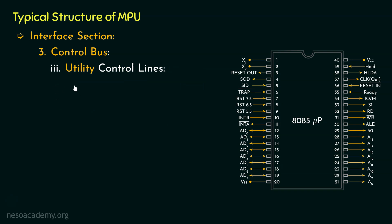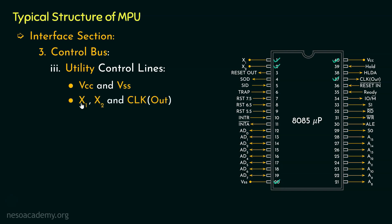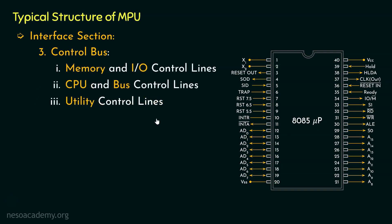Let's now learn about the third category, that is the utility control lines. In this category we have the power supply lines — VCC and VSS. VCC, or pin number 40, is responsible for the 5V DC power supply, and VSS, that is pin number 20, is the ground connection. Next, we have the pins X1, X2, and the Clock Out — the clock signals. Pin numbers 1 and 2 are responsible for the clock pulse of the microprocessor, and if the microprocessor wants to synchronize the peripheral devices, it gives the timing reference to the peripheral devices through pin number 37 or Clock Out.